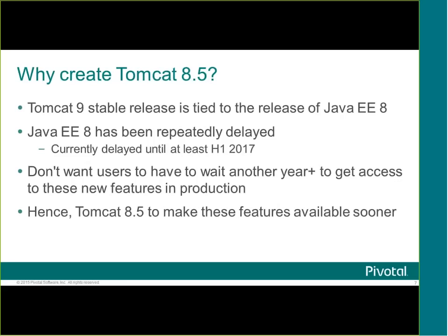We'd obviously like those features to be available to users in a stable release as soon as possible. The problem is Tomcat 9, like all previous Tomcat releases, its first stable release is tied to when the associated Java EE specification is released. Tomcat 9 depends on Java EE 8 because Servlet 4 is part of Java EE 8, and Java EE 8 has been repeatedly delayed — currently until at least the first half of next year, and it's probably going to be delayed beyond that. So we were looking at heading towards two years before these features would be in a stable release people would use in production. Hence we came up with the idea of Tomcat 8.5 to make these features available sooner.